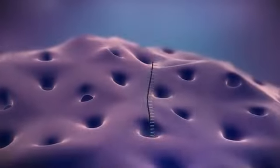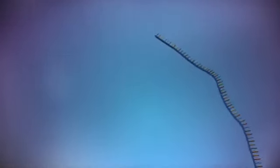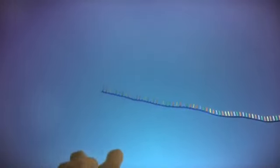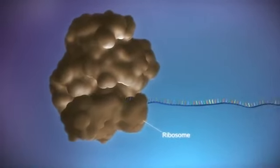The messenger RNA then moves out of the nucleus into the cytoplasm. Protein factories in the cytoplasm, called ribosomes, bind to the messenger RNA.